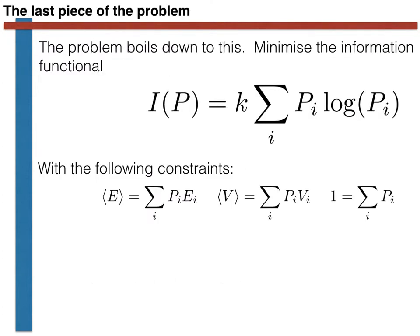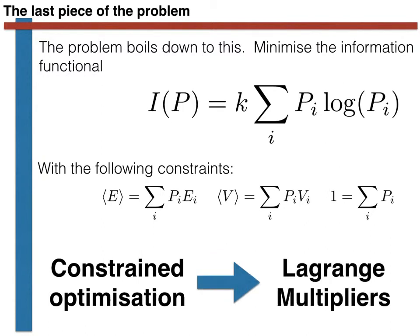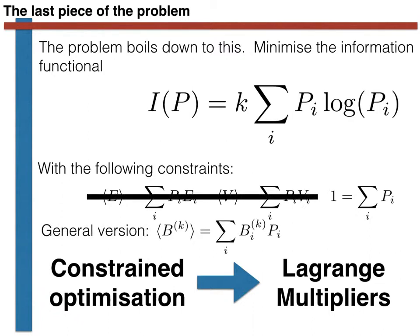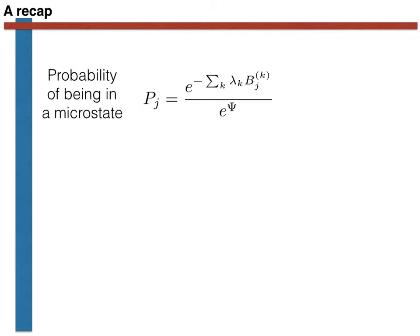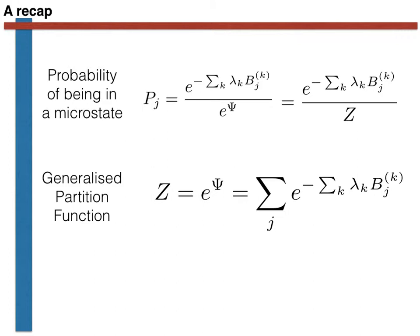We found an expression for these probabilities by minimising the information functional subject to the set of constraints shown. In doing this, we used the method of Lagrange multipliers because we are solving a constrained optimisation problem. In the interest of generality, we wrote our constraints on the average value of the extensive thermodynamic variables using the symbol Bk for an extensive thermodynamic variable. The final expression for the probability of being in a microstate is shown here, and Z — the generalised partition function — is given by the corresponding equation.